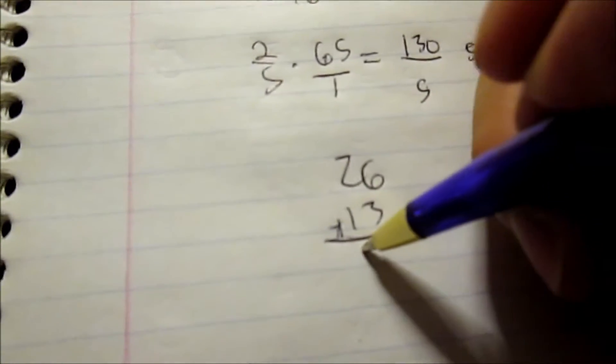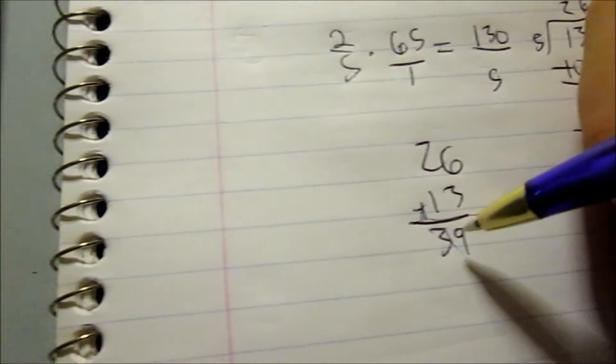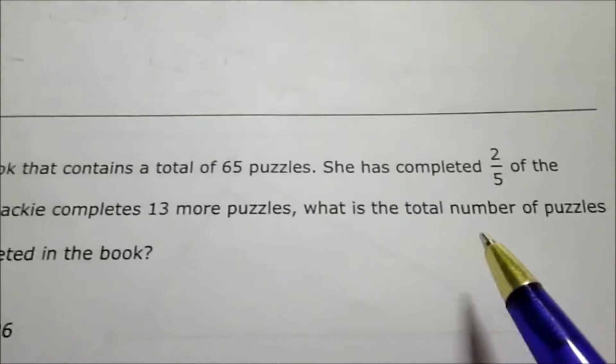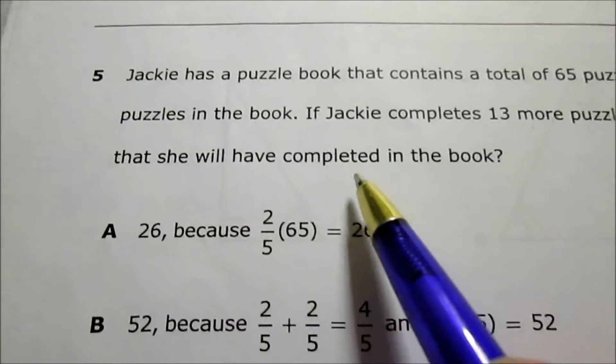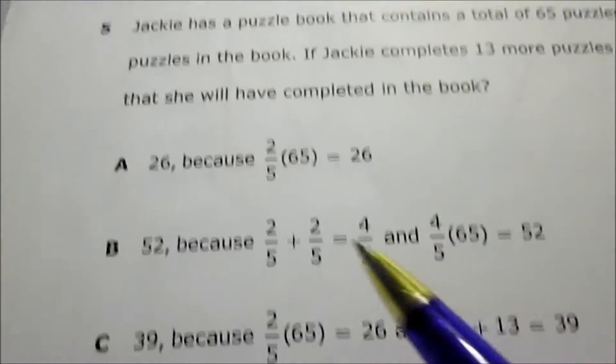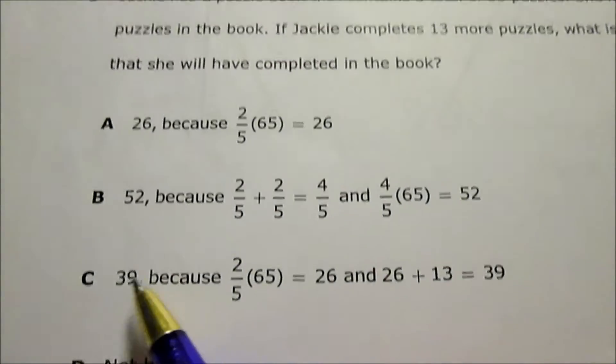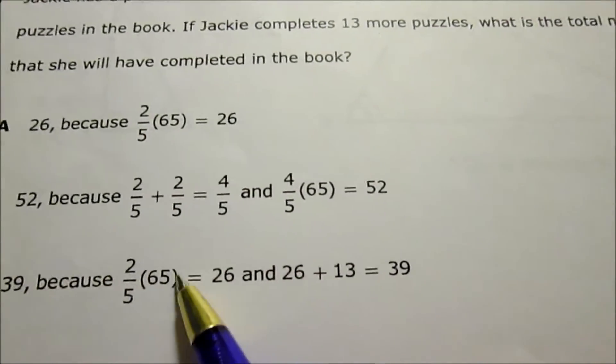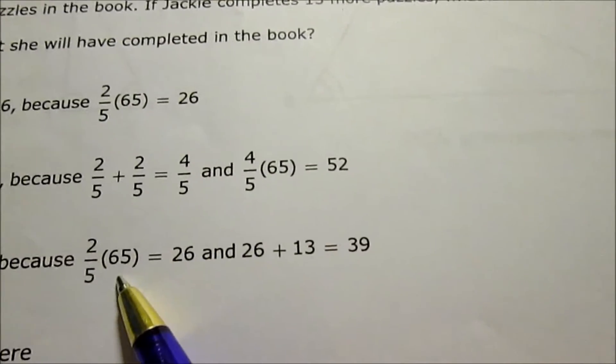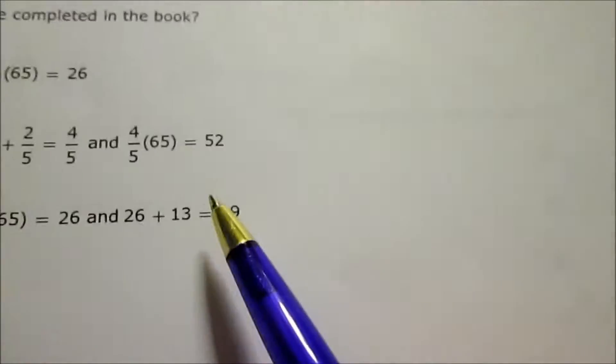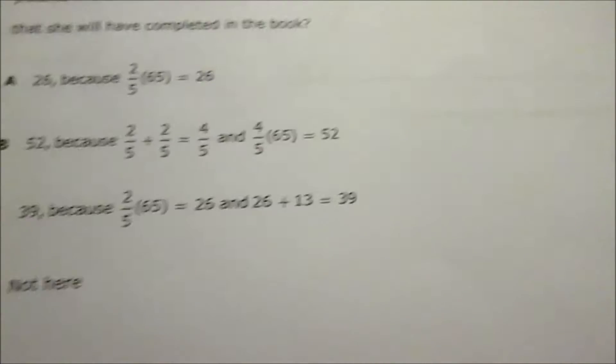And then she completed 13 more, add in 13. Remember it said she did 13 more. 26 plus 13 is 39. It says what is the total number of puzzles that she would have completed in the book? Well, let's see, yep, 39 is there in answer choice C. It's the exact same work that I did: multiply by two-fifths, add 13. Your answer is C.